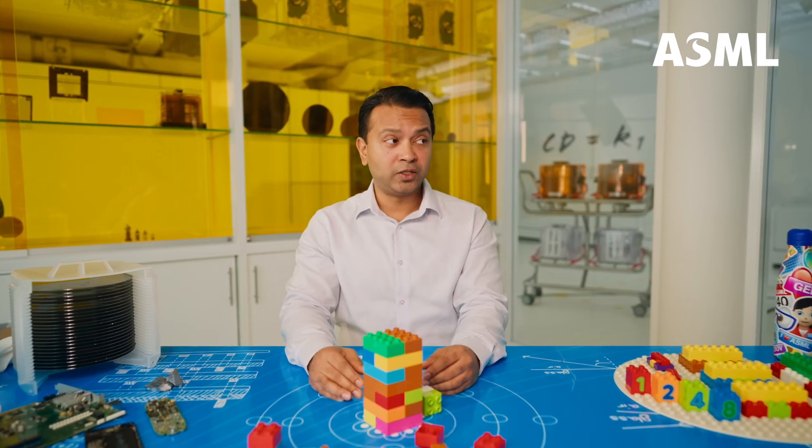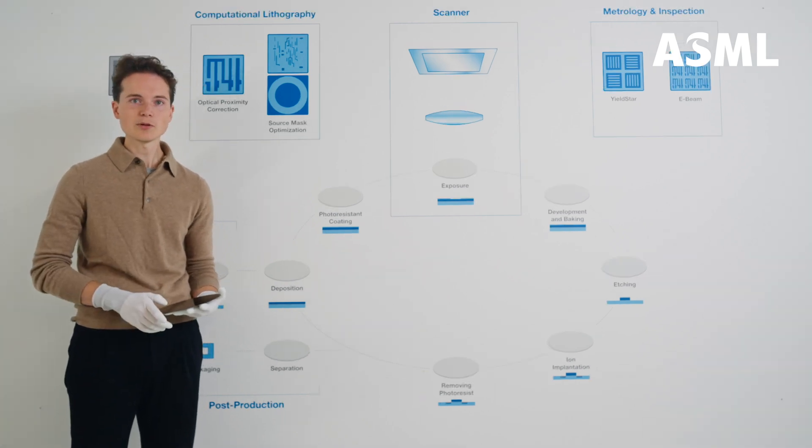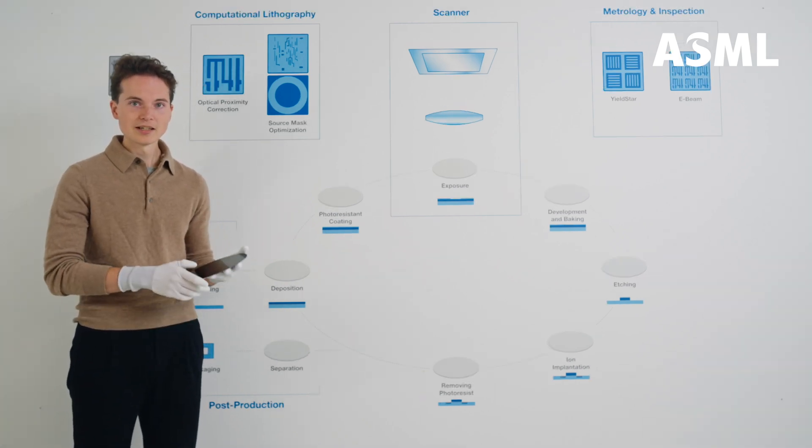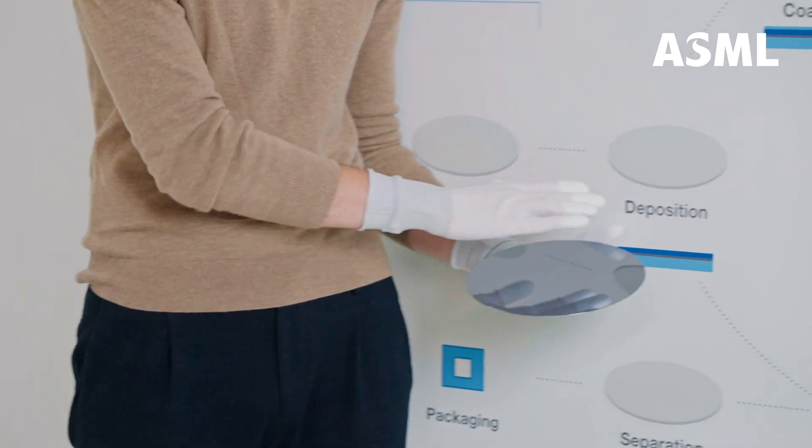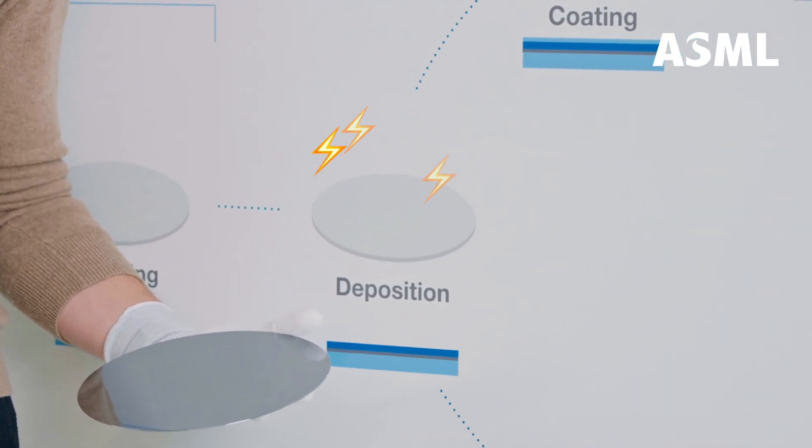We're going to start with the foundations. Joop! Yes. First, depending on what we want the chip to do, a bare silicon wafer gets a thin film of conducting, isolating, or semiconducting material deposited on it.